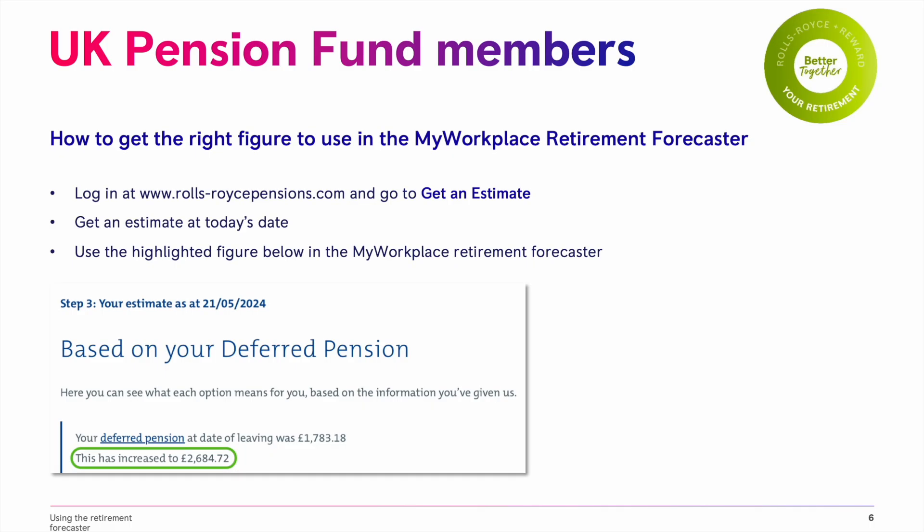If you're a member of the Rolls-Royce UK Pension Fund, this slide shows you how to get the right figure to enter into the retirement forecaster. By doing this and adding any other retirement savings, your forecast will show it all in one place. Log in to the member website and head to the Get an Estimate page before getting a retirement forecast. It's best to enter the figure from your estimate as it's the current annual value of your deferred pension before any reductions for early retirement. Remember to use your own figure and not the one showing on this video.